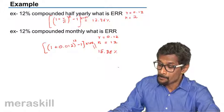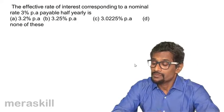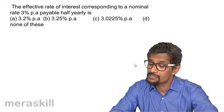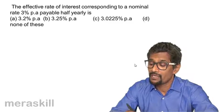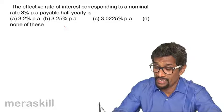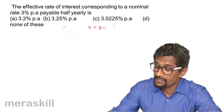Further, let's take more examples. The effective rate of interest corresponding to a nominal rate of 3% per annum payable half yearly is what? So we have R is 3%, so in that case 0.03.